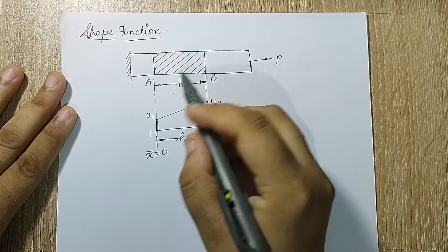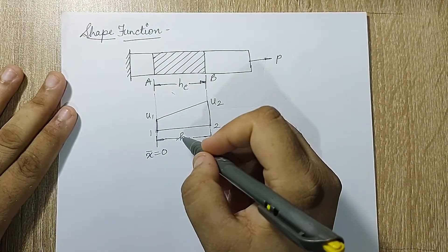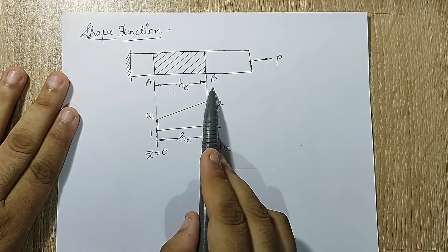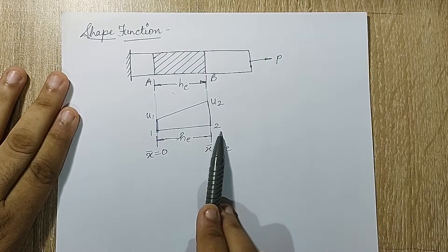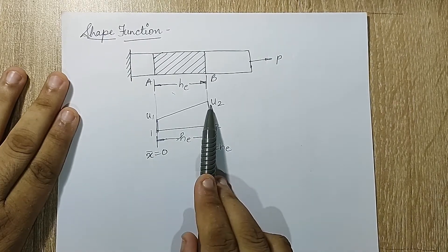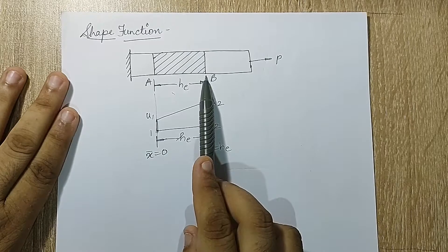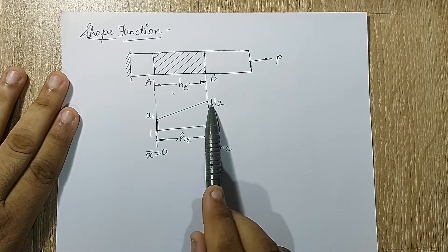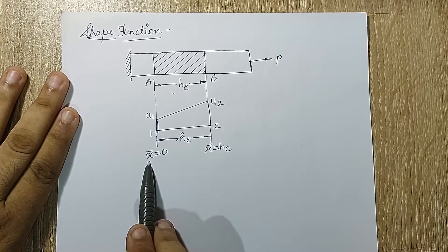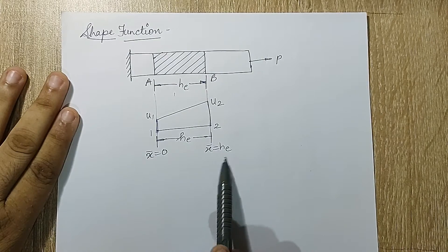I have taken a rectangular bar fixed at one end; on the other end there is a load P. This is a small portion of the bar which I am going to study. Since there are two points A and B, which are the two nodes — node 1 and node 2 — I have drawn a straight line. This is called a linear element. u1 and u2 indicate the displacement at these two nodes. I mark the local coordinate x-bar as zero at node 1, and the total length is h_e, so x-bar equals h_e at node 2.